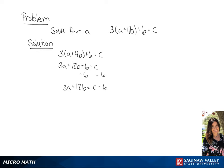Now we're going to subtract 12B from both sides, giving us 3A equals C minus 6 minus 12B.